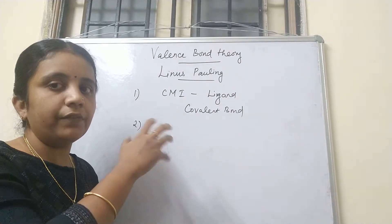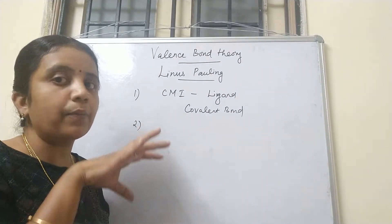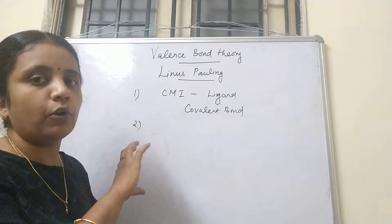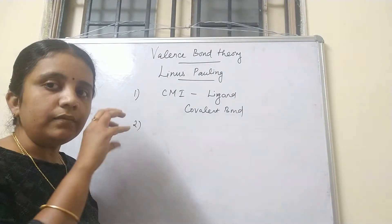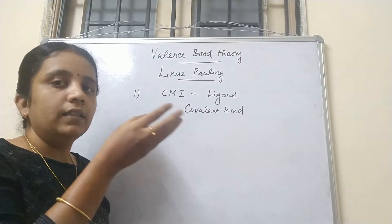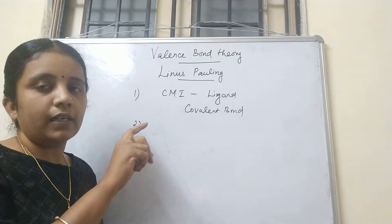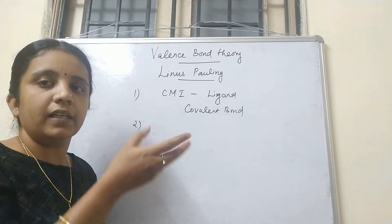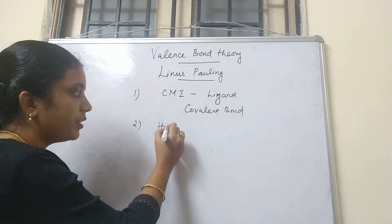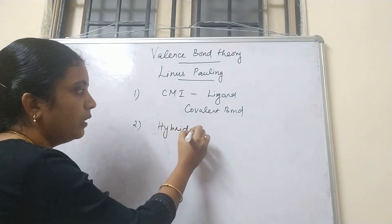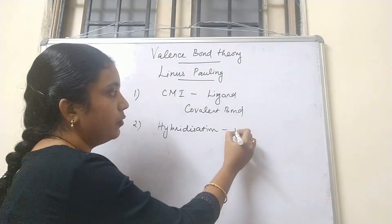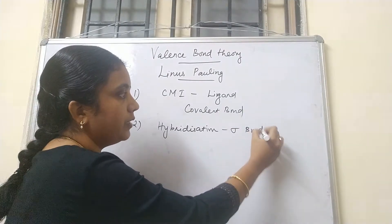There is a process happening between the two orbitals which is called hybridization. The hybridization involves the vacant orbital of your central metal ion and the filled orbital of your ligand — the filled orbital that has a pair of electrons. Through this hybridization process, sigma bond formation takes place.